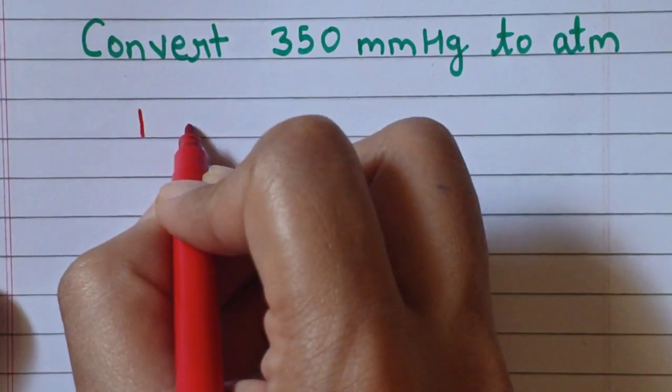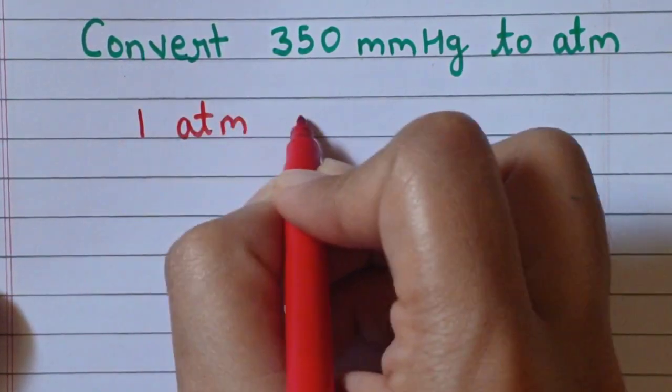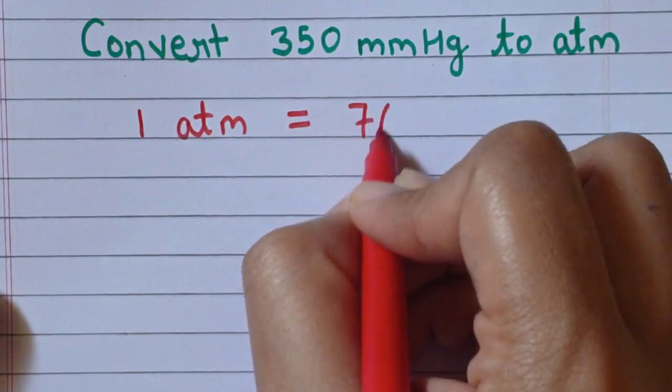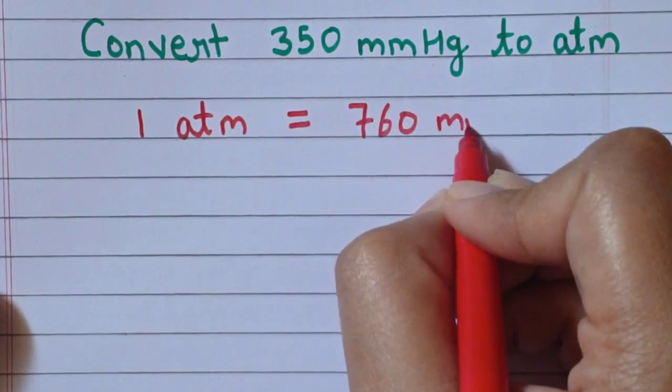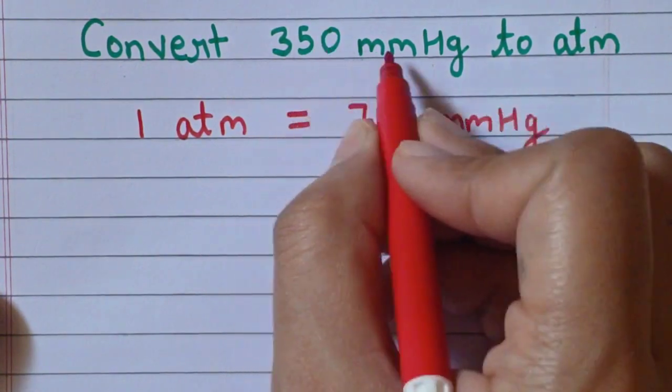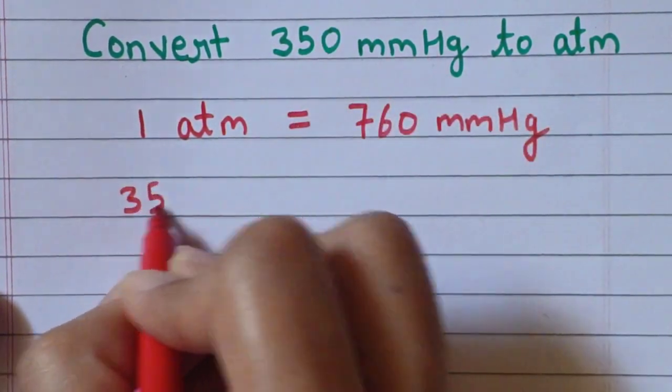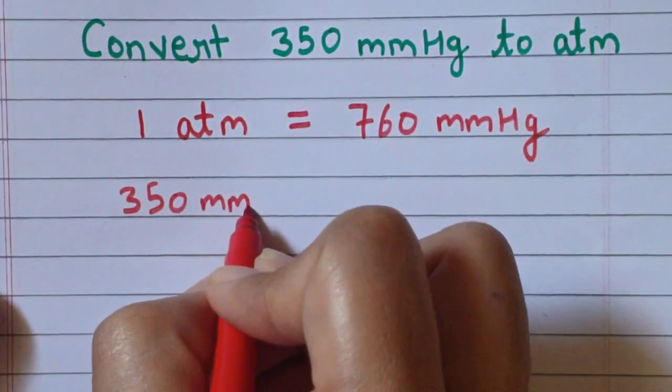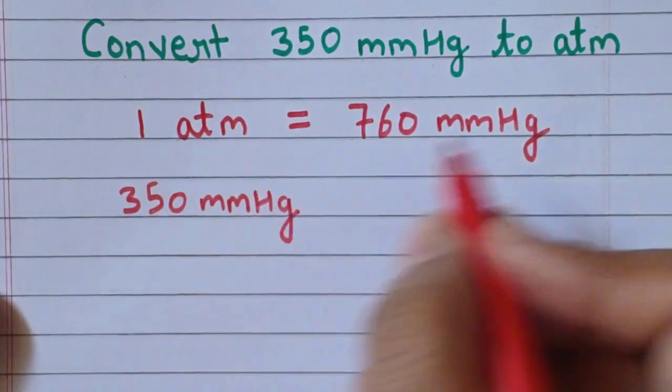So here we know that one atmosphere is equal to 760 millimeter of mercury. So 350 millimeter of mercury contains how much atmosphere?